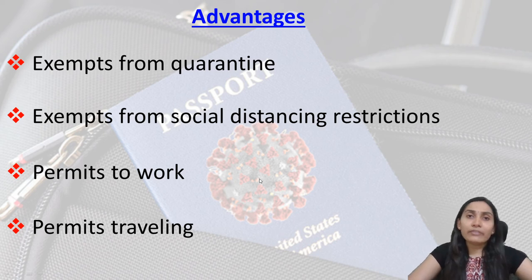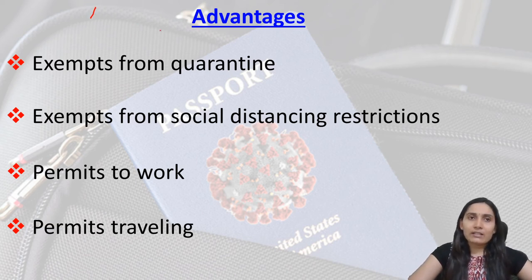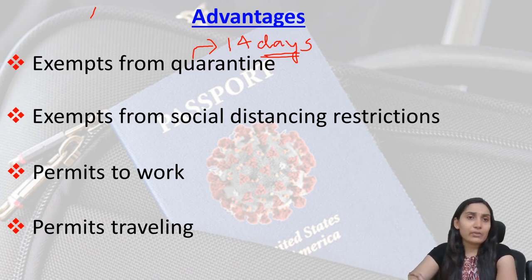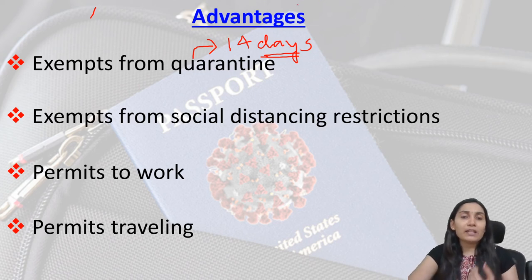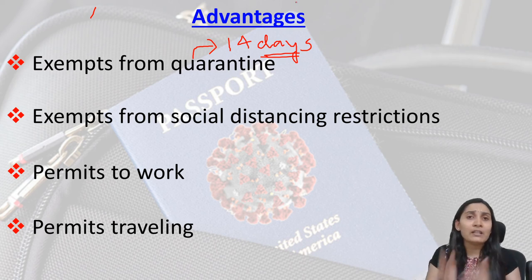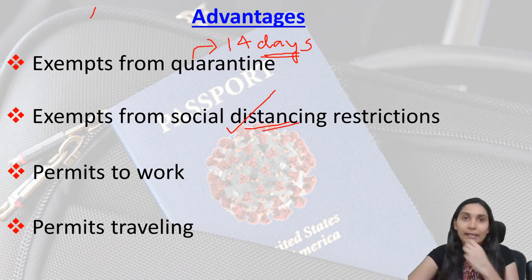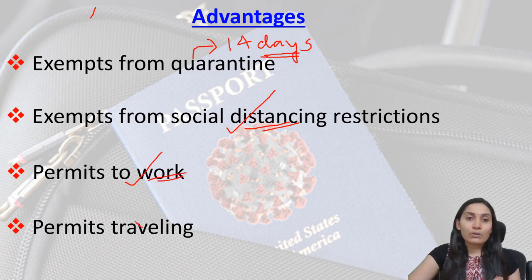The advantages of an immunity passport: first, it will help the traveler to be exempt from quarantine. Quarantine is meant to ensure the person does not spread the pandemic to other individuals. If a person has an immunity passport certifying they are immune, they need not undergo quarantine. It also exempts the person from social distancing restrictions, permits the person to work, and permits traveling.